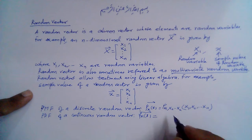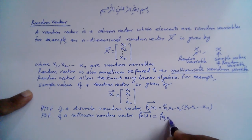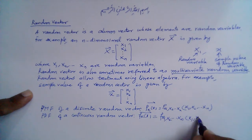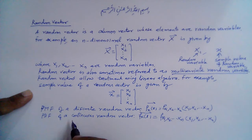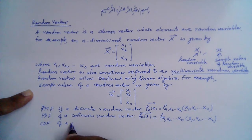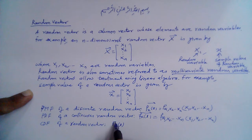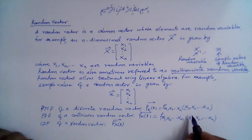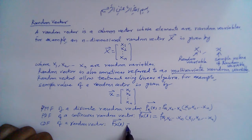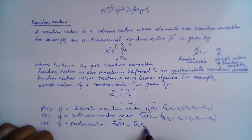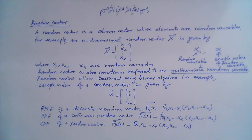The PDF of a continuous random vector f_X of x-bar has entries f(x1, x2, ... xn). The CDF, cumulative distribution function, of a random vector is denoted by capital F_X of x-bar, and is given by the joint CDF F(x1, x2, ... xn) with sample values x1, x2, ... xn. This is a brief summary of the random vector.